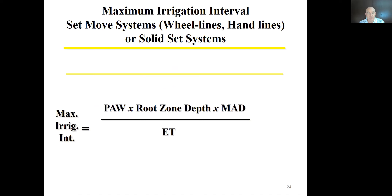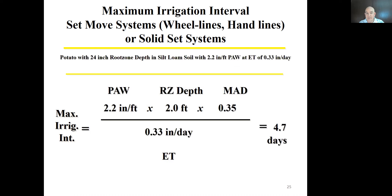To calculate the maximum irrigation interval: take the plant available water, multiply by root zone depth, multiply by the MAD percentage, then divide by ET. For example, with a 24-inch root zone for potato in a silt loam soil — plant available water of 2.2 inches per foot and ET of 0.33 inches per day — the result is 4.7 days between irrigations. Going longer than that means serious plant stress.